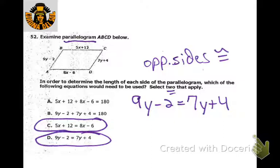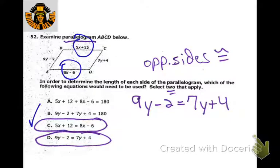We have a parallelogram, so we set the opposite sides equal to each other — they're congruent. We set these expressions equal to each other for one equation, and this one equal to this one for the other.